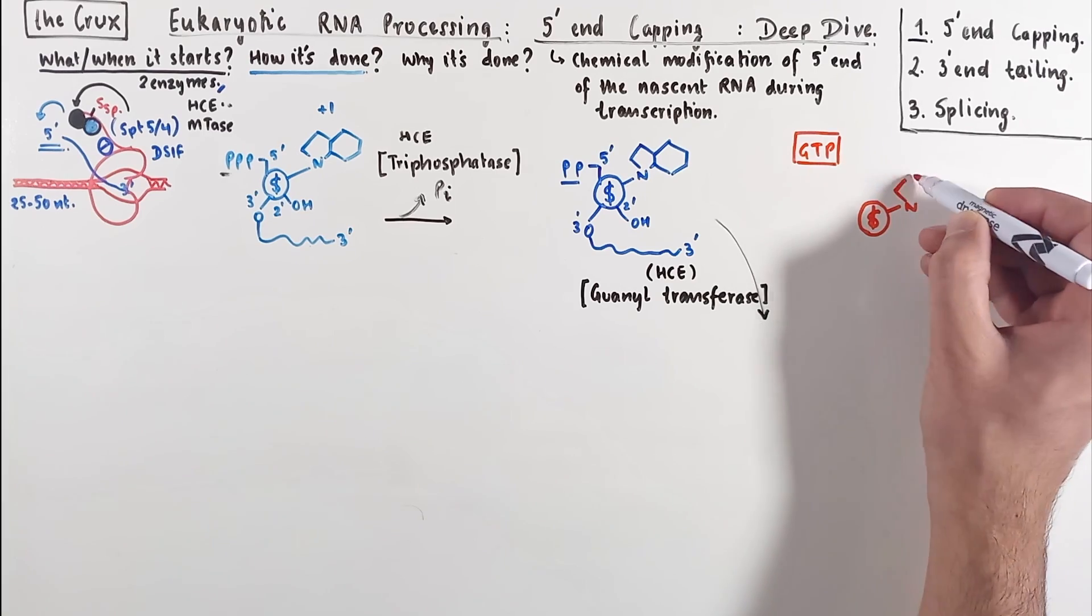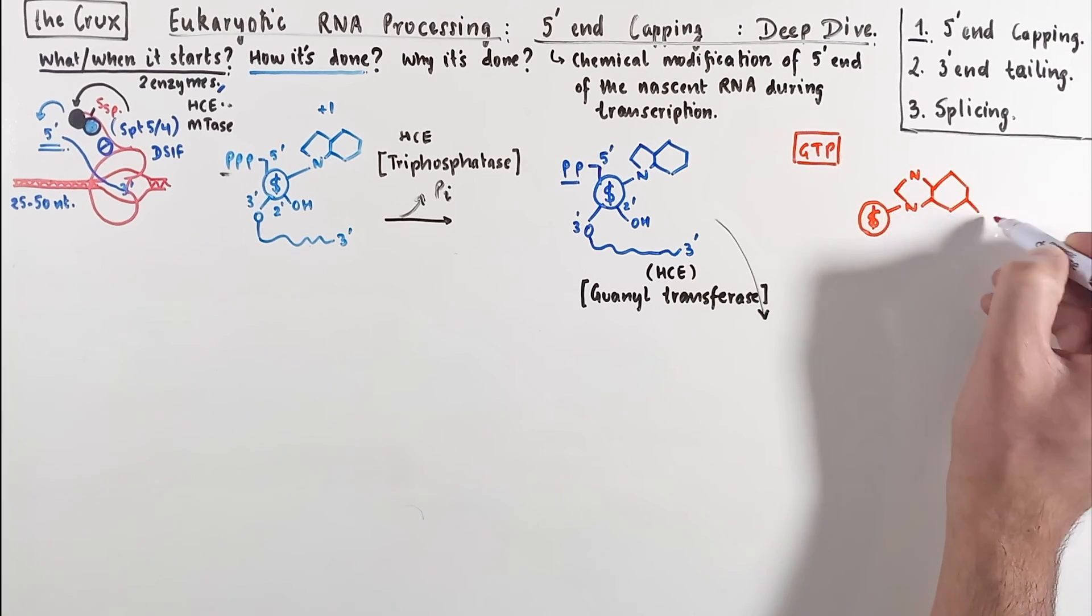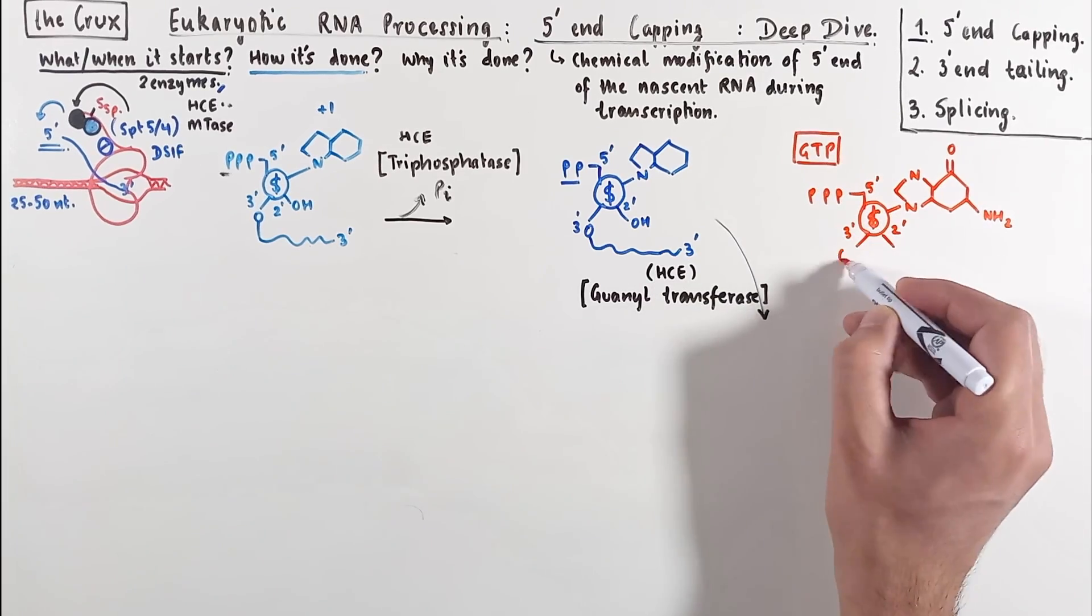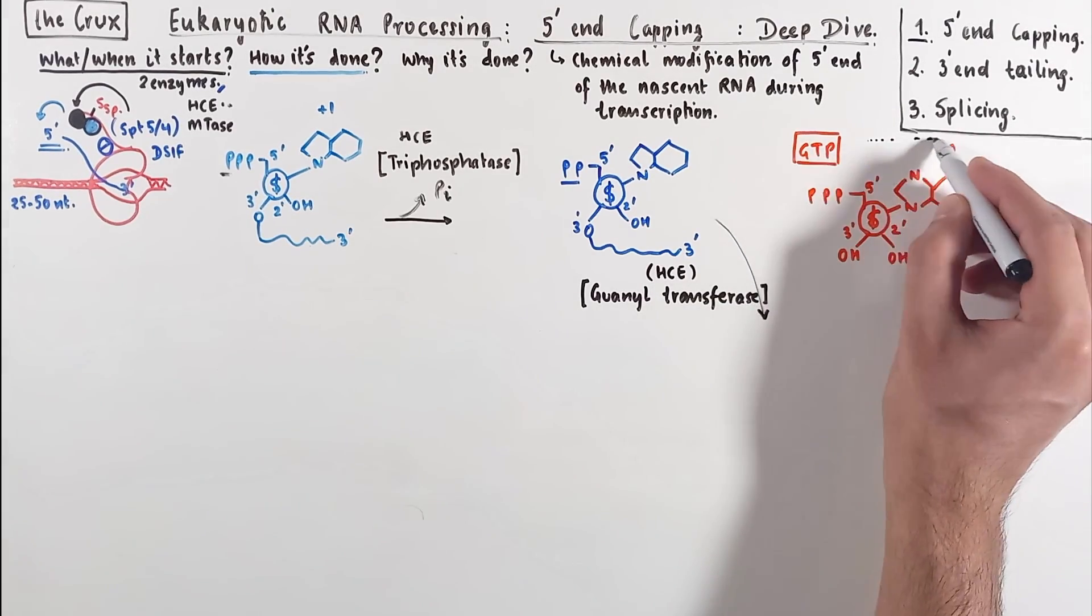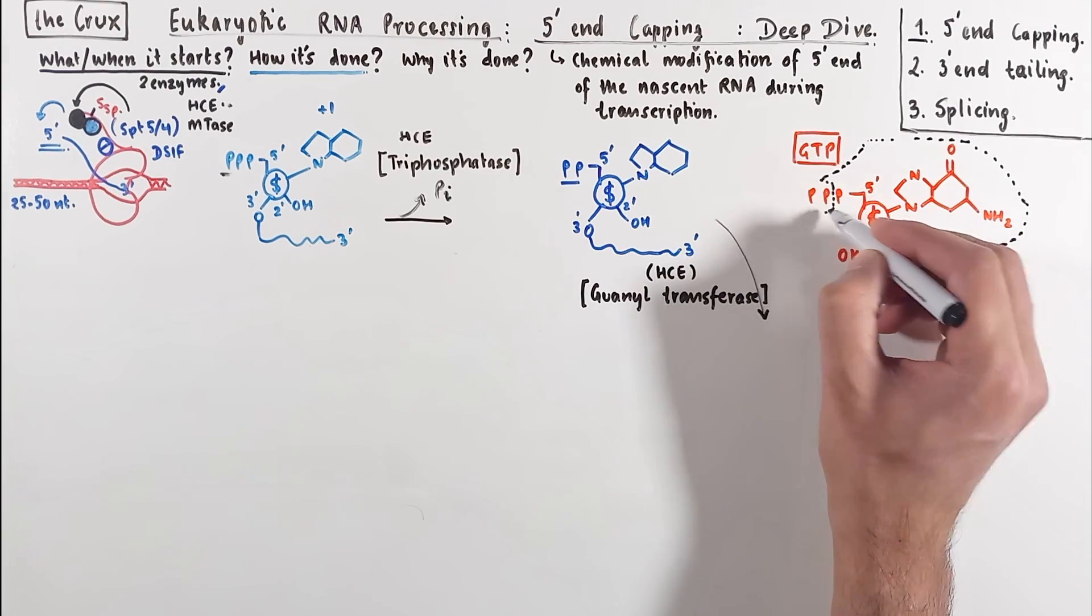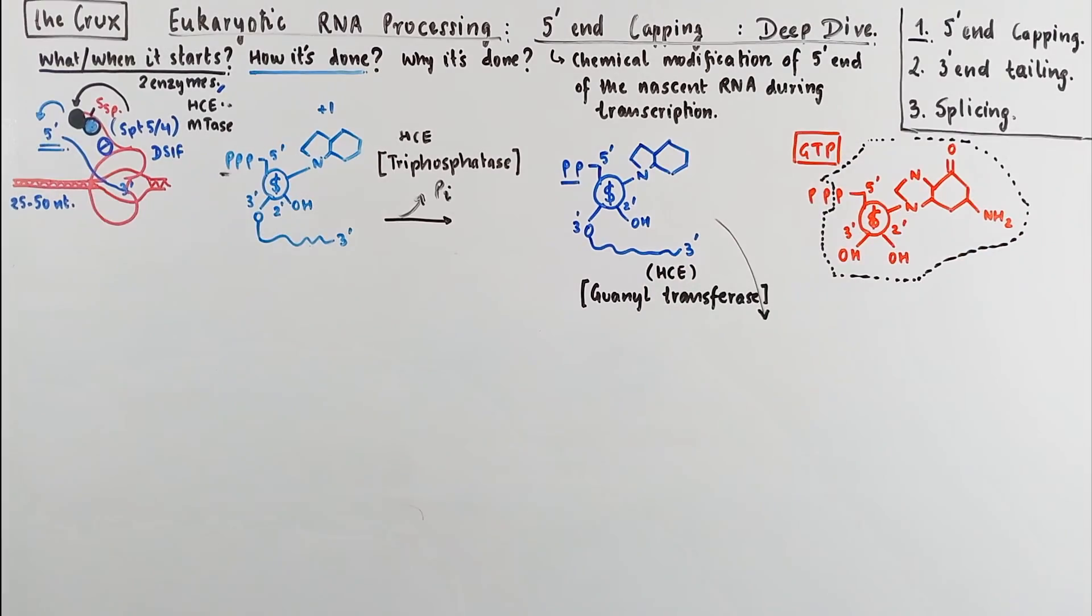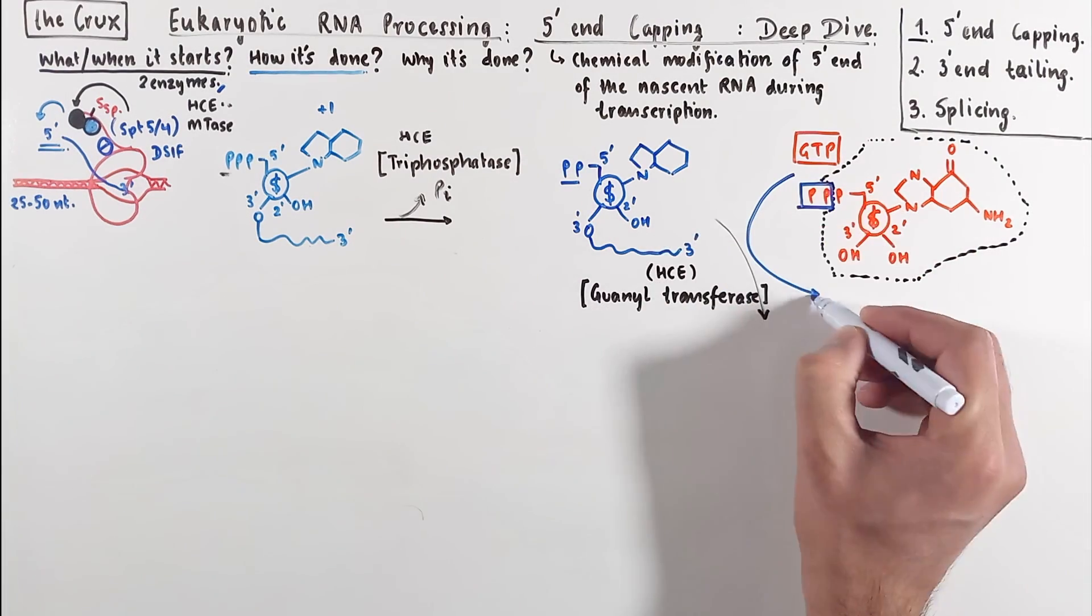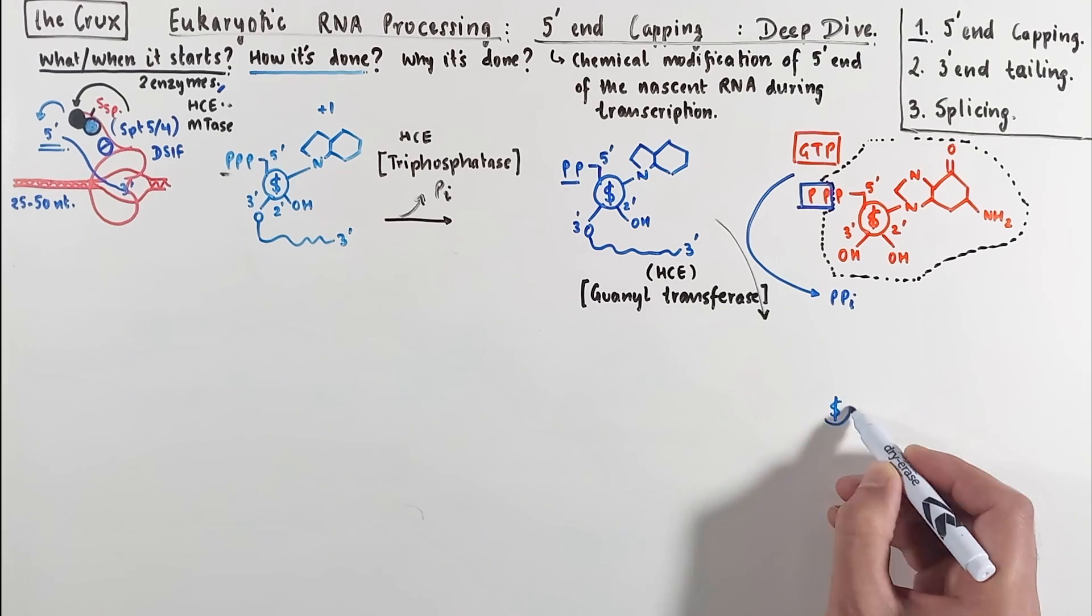GTP is just a nucleotide with guanine at the nucleobase. And here's a rough sketch of the GTP. Now from this GTP, the guanyltransferase enzyme part of the human capping enzyme transfers the guanosine with just one phosphate. And the two phosphates at the gamma and the beta positions are released.